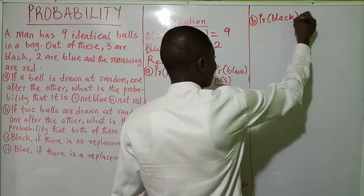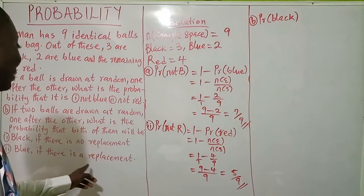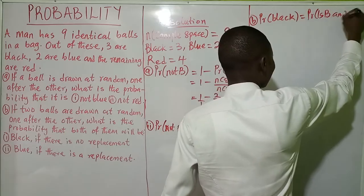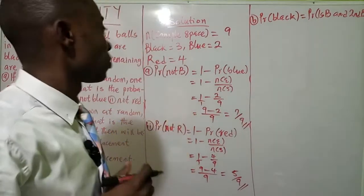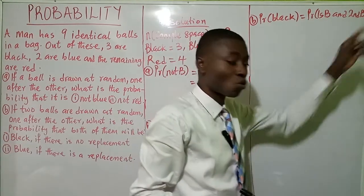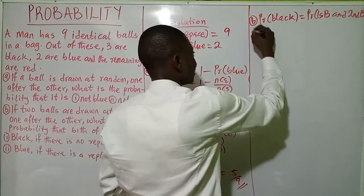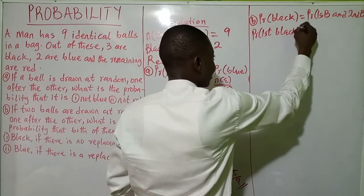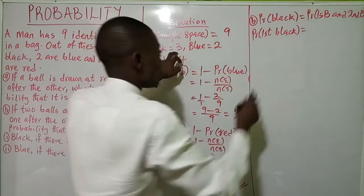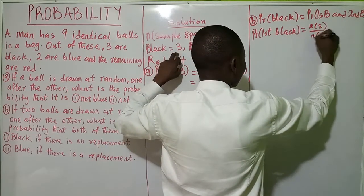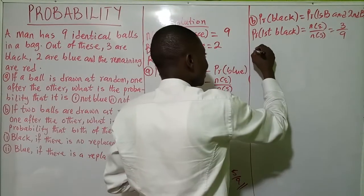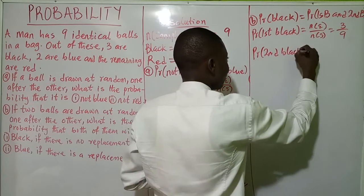Probability of both black (no replacement) means the probability that the first ball picked is black AND the second ball picked is also black. The probability of the first black is: number of black balls over total sample space, which is 3 over 9. So probability of first black is 3/9.